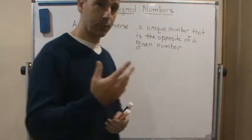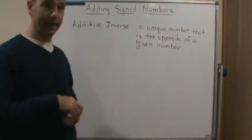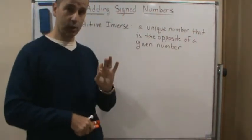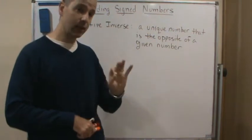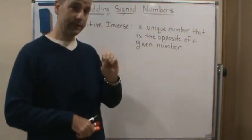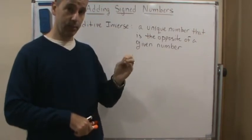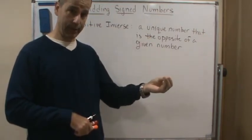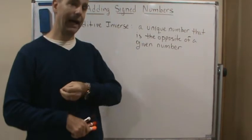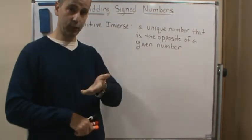And so this property of inverses is the fact that every single, it's based on the fact that every single number, every single integer has a unique number that's the opposite of it, right? So any number you give me, I can tell you the opposite of it, except for zero.